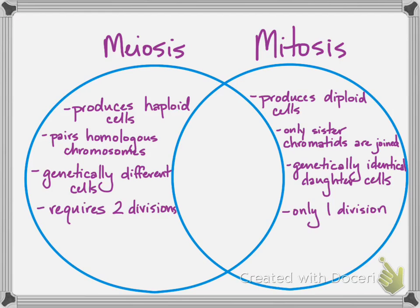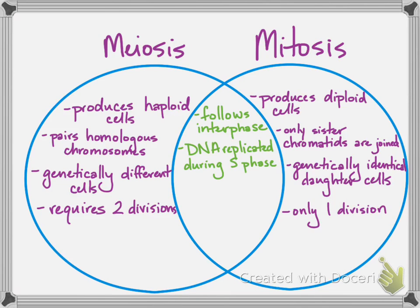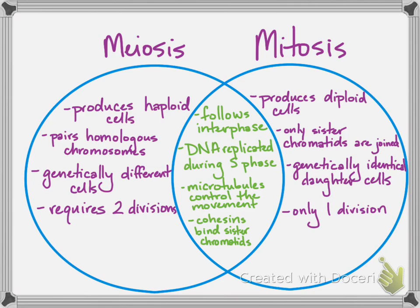And third, two divisions are going to be required. A few similarities to note though: the cell is still going to go through interphase. DNA is still going to be replicated during S phase of interphase. The microtubules or spindle fibers still regulate the movement of the chromosomes. And sister chromatids are still attached by cohesins at their centromere, just like in mitosis.